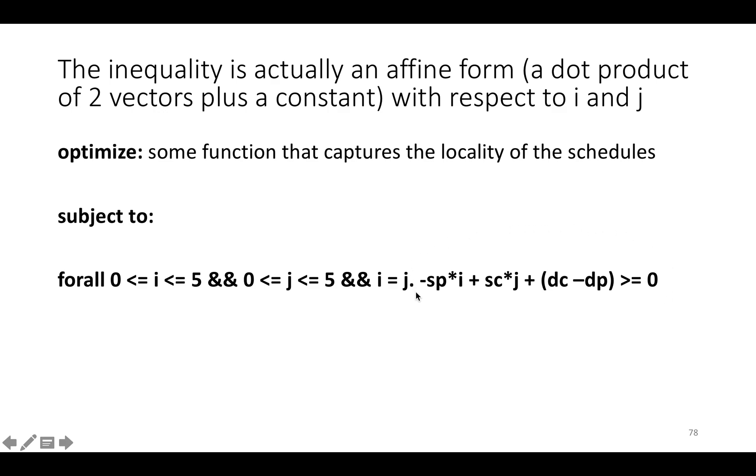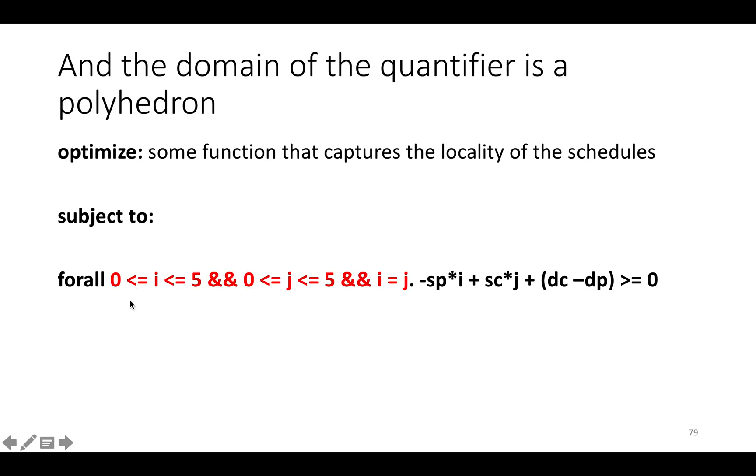So the constraint part fits Farkas Lemma. We have an affine form and the constraint that the affine form is greater than or equal to zero, and we have a universal quantifier. And then crucially, the domain of this quantifier is a polyhedron.